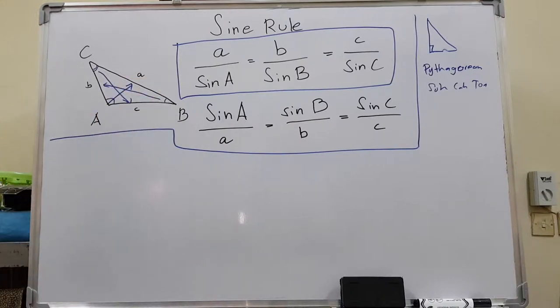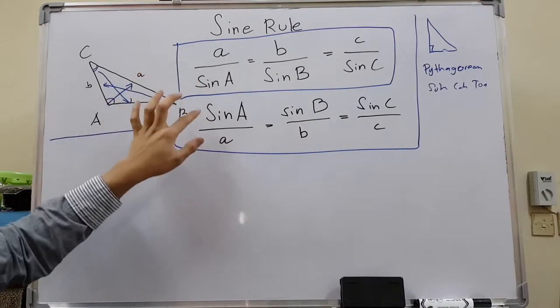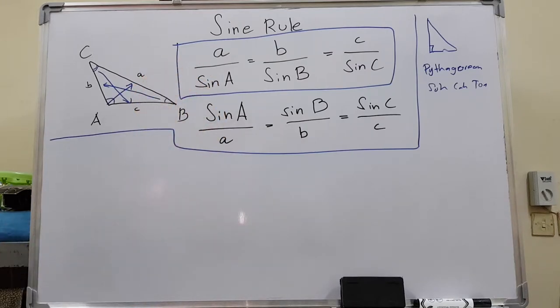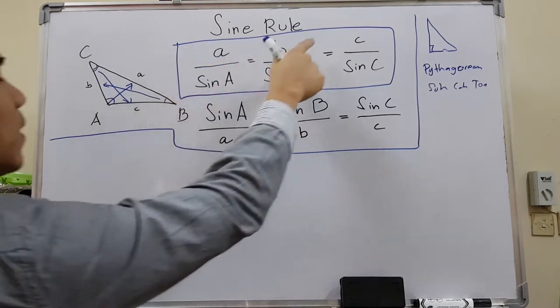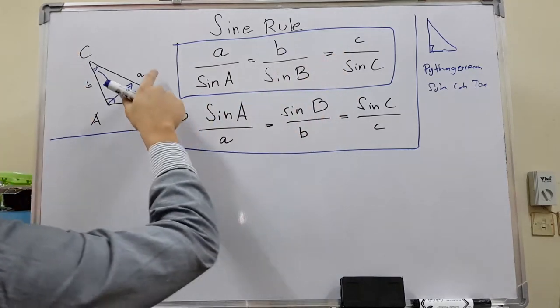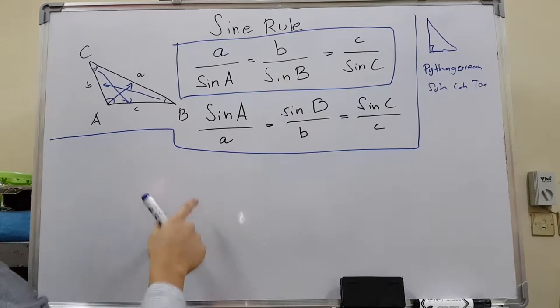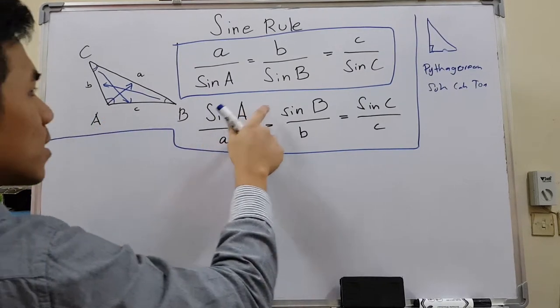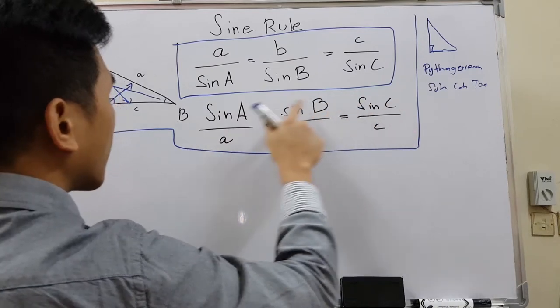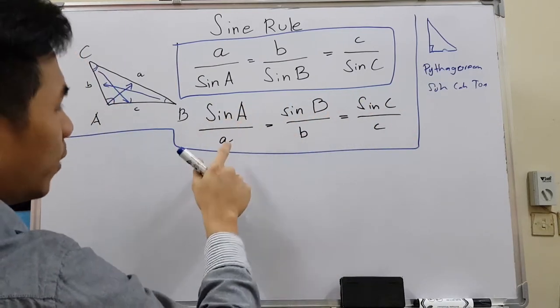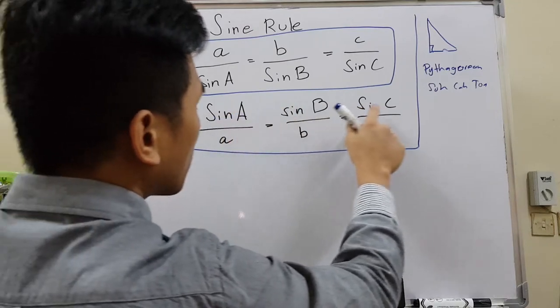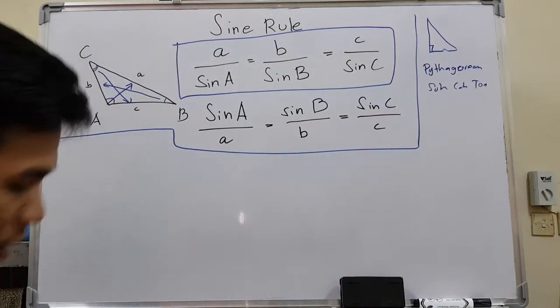There are two formulas given in books and you can use any of these two. But I suggest for beginners, especially those having problems with equations, proportion, or algebra, use this one when the missing information is on top. For example, if the side is missing, make sure all the sides are on top. If the angle is missing, use sine A over a, where everything on top must be angles. Now I will give you examples.